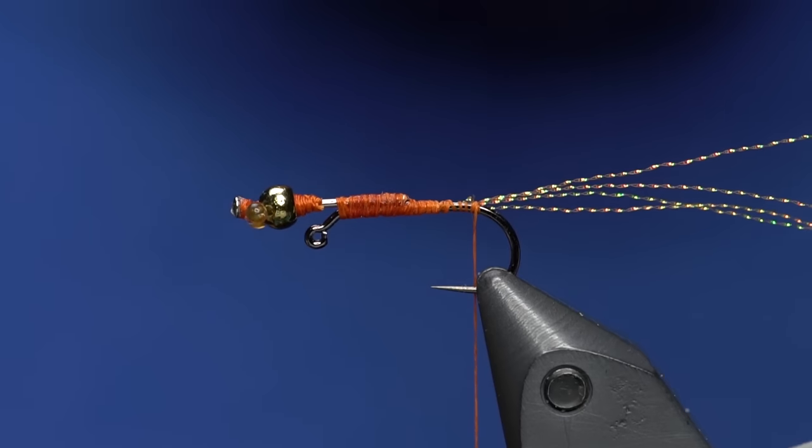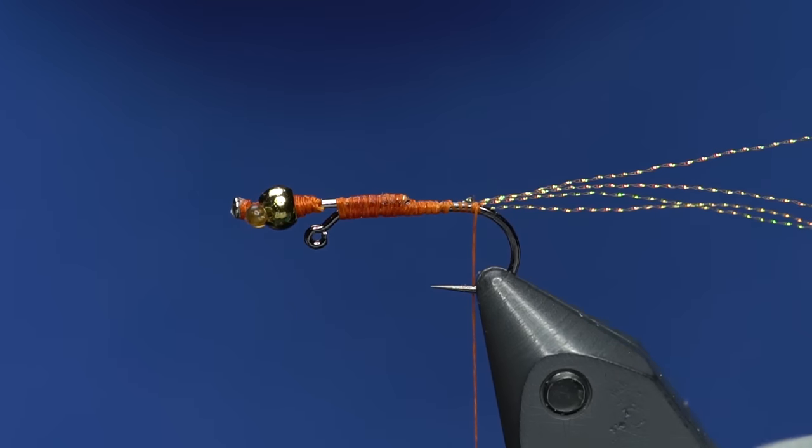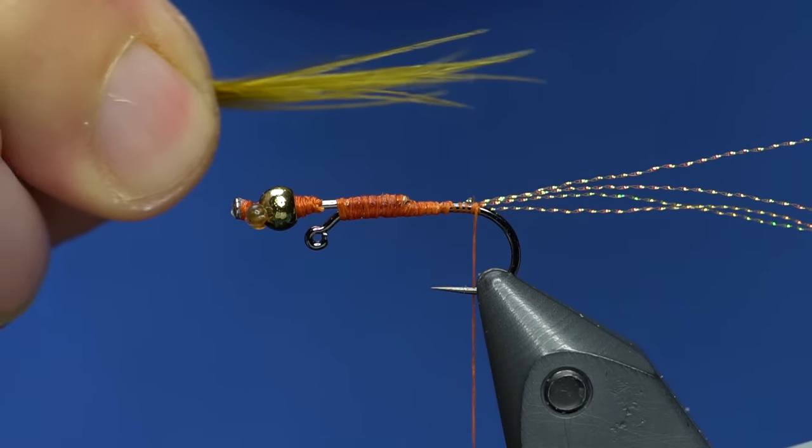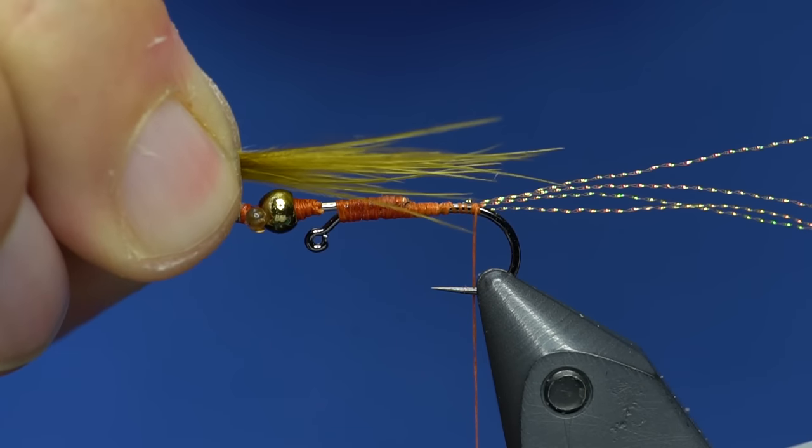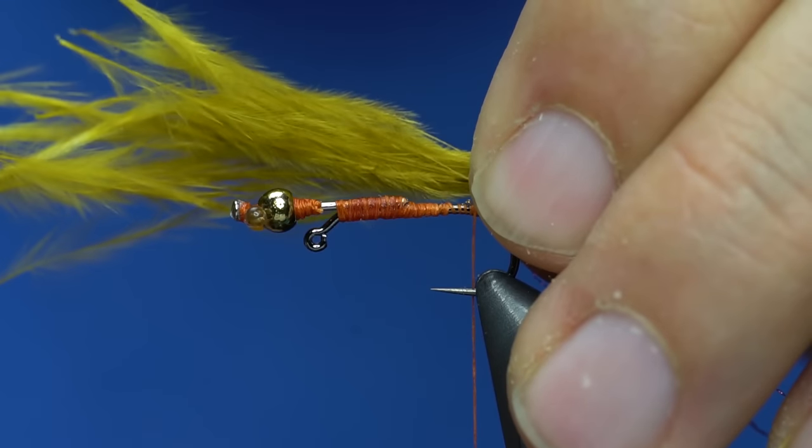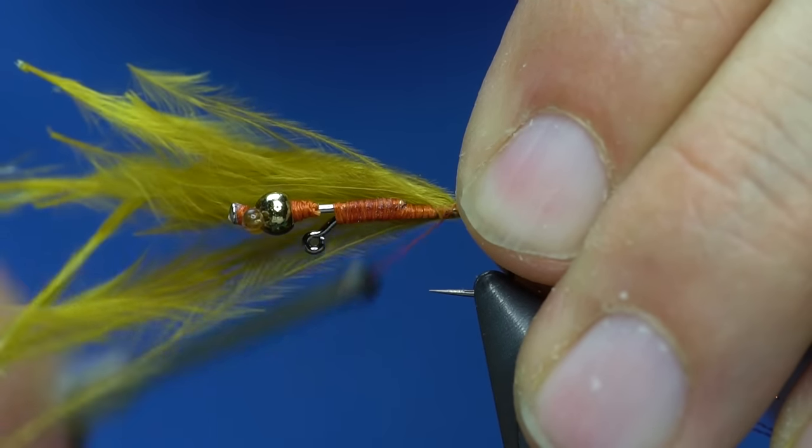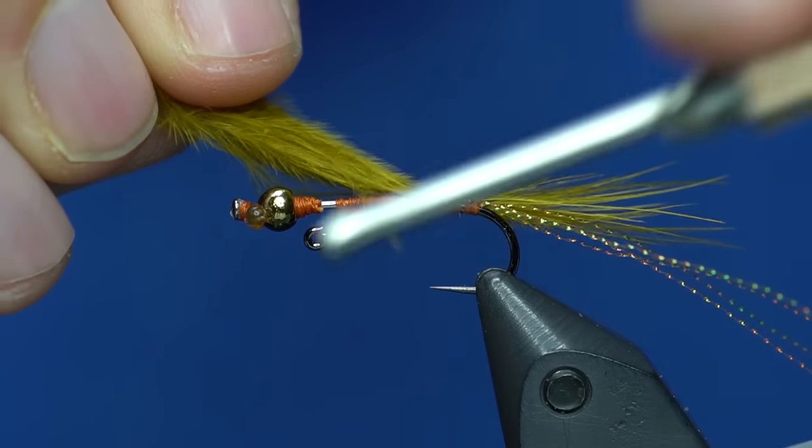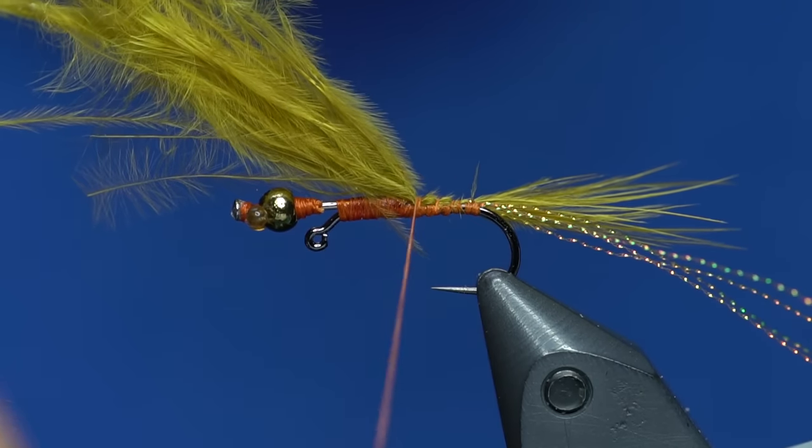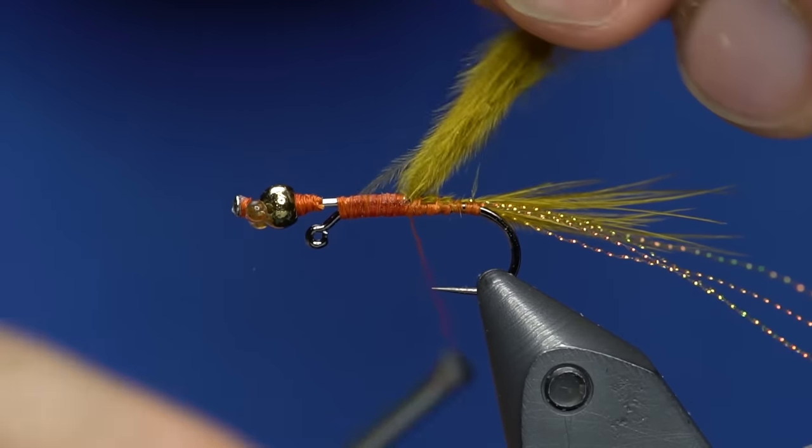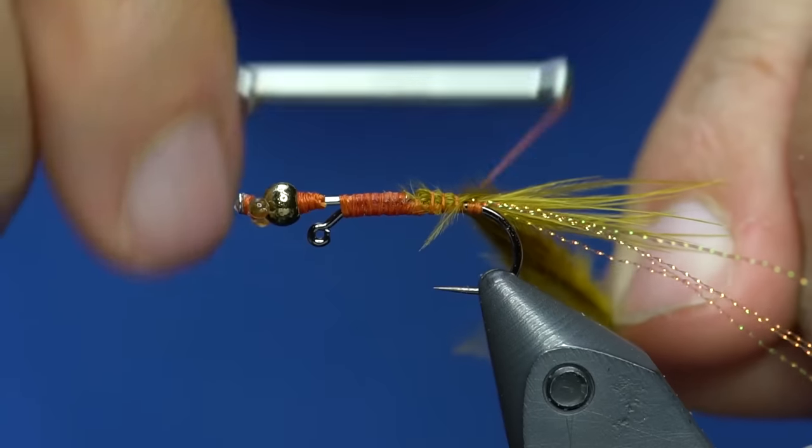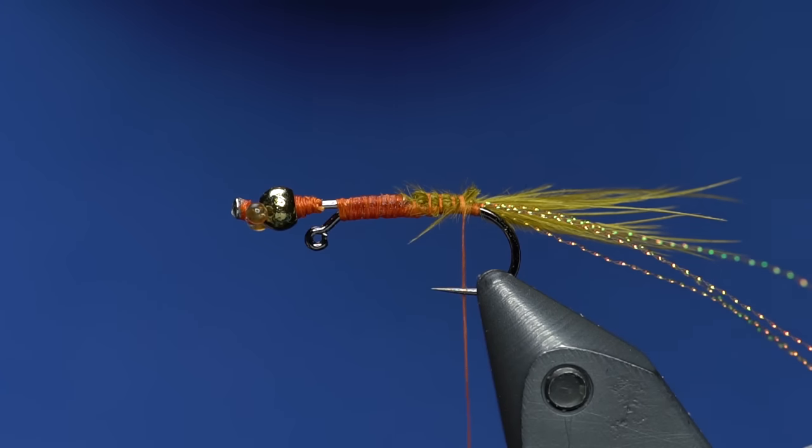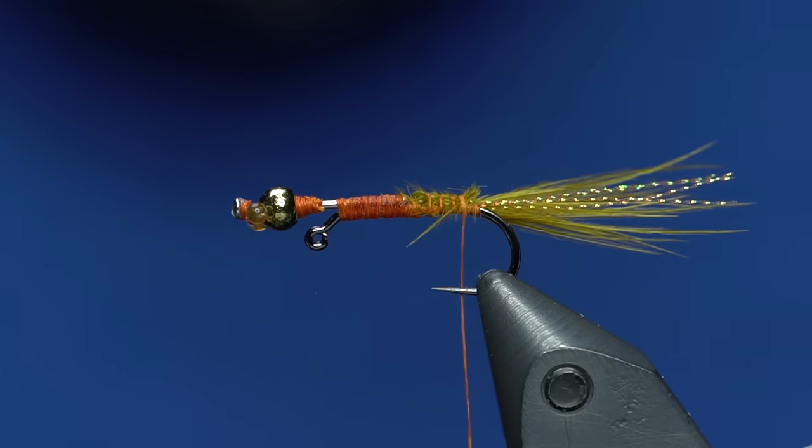Now I'm going to grab some golden olive marabou. This is the Nature's Spirit strong marabou. I'm just going to grab a little section off the side. With the damsel, I don't want it to be super long, so I'm going to gauge it from about the bead back that length. I'm just going to tie this in and work the thread forward, going right up against where the pin drops off. Then I'll grab my midge flash and trim that a bit.